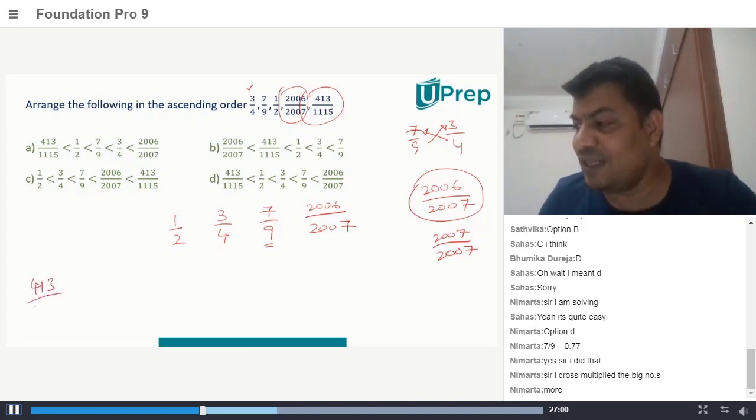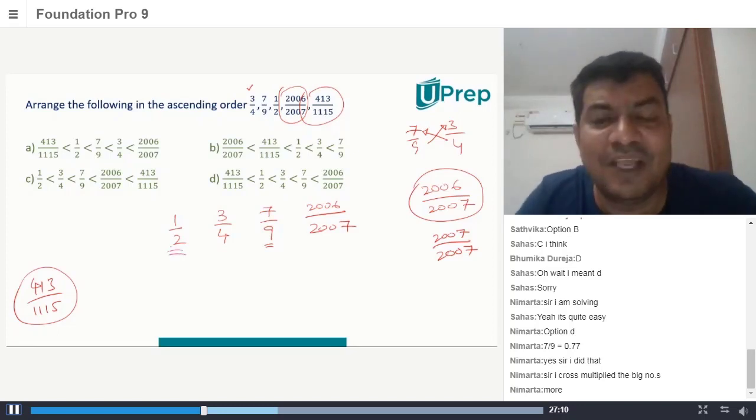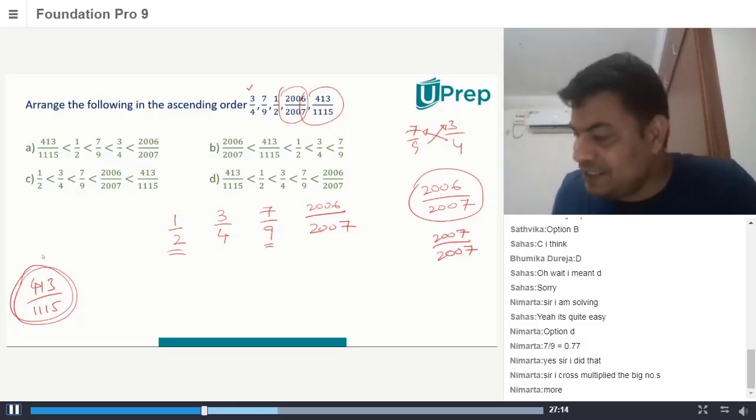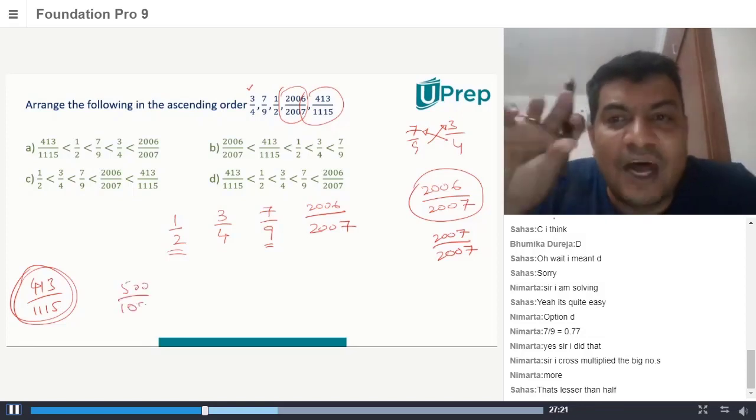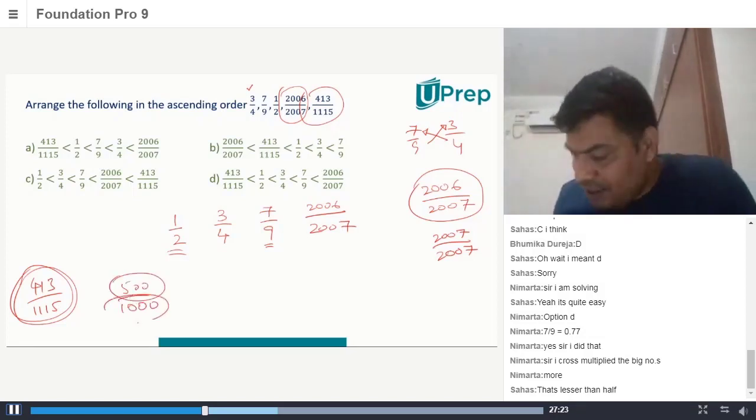Now coming to the next number, 413/1115. When I look at this number it also tells me something very clearly. You can see 1/2 is 50%. Can I say this is less than 50%? Because if I were to have 500/1000, 500/1000 is half.